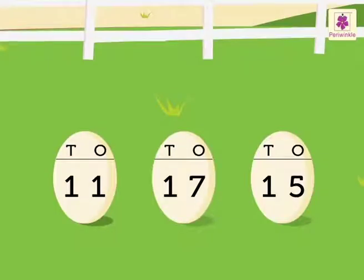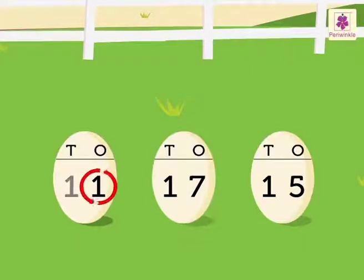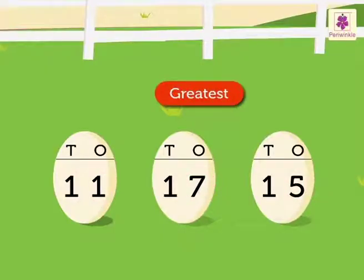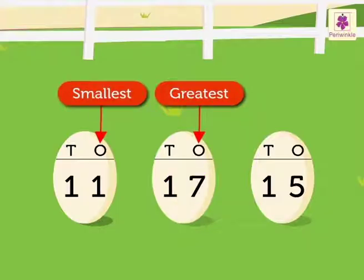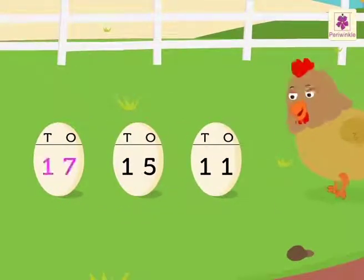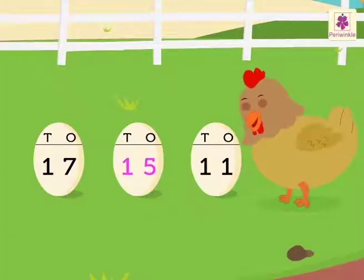Let's compare the ones, as each number has one ten. Here there is one one in 11, seven ones in 17, and five ones in 15. So, the greatest is seven ones in 17 and the smallest is one one in 11. Hence, the descending order is 17, 15, 11.